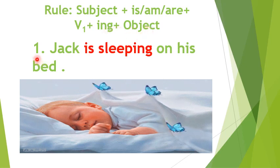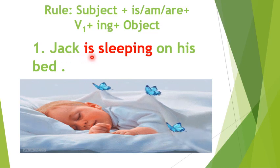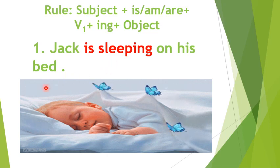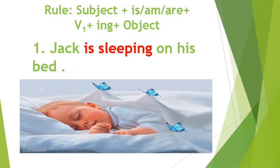It will be more clear with examples. Number 1: Jack is sleeping on his bed. In this sentence, the subject is Jack. Jack is a singular person, so we are using the helping verb 'is'. 'Sleep' is the verb and we have added -ing with it, so it becomes 'sleeping'. 'Bed' is the object. This sentence belongs to present continuous tense.